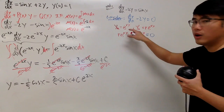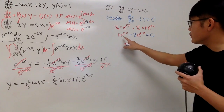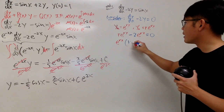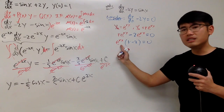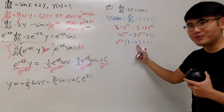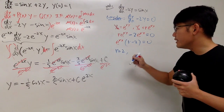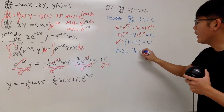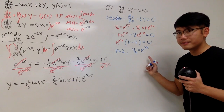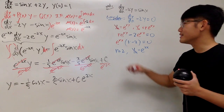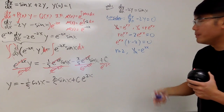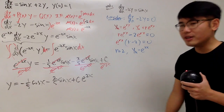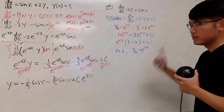Our goal is to find which r makes this work. Both terms have e to the rx, so we factor that out: e to the rx times (r minus 2) equals 0. Since e to the rx is never equal to 0, the only hope is r minus 2 equals 0, so r equals 2. Therefore y_h equals e to the positive 2x. Since it's first order, that's the only homogeneous solution. Check my differential equation playlist for more detail on higher-order cases.